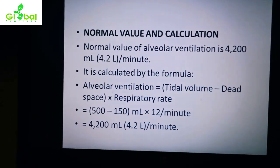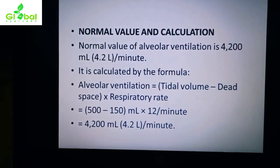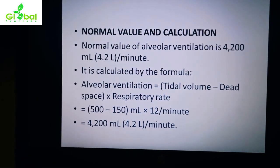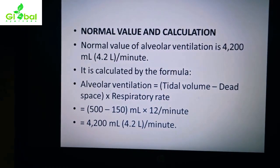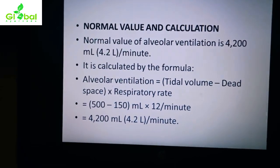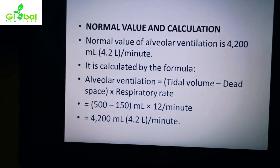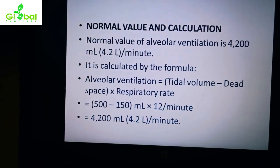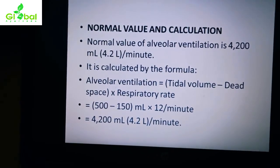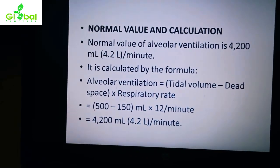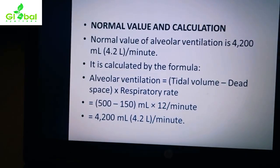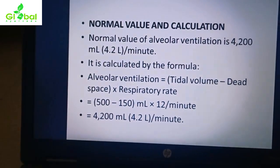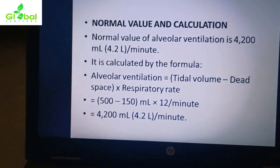Now, Alveolar Ventilation Calculation. The normal value of alveolar ventilation is 4200 ml, or 4.2 liters per minute. The formula is: Alveolar Ventilation = (Tidal Volume − Dead Space) × Respiratory Rate.